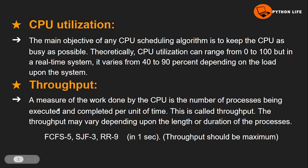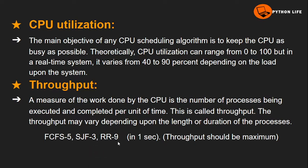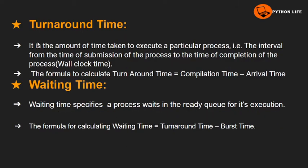The next criterion is throughput. Throughput measures the number of processes executed and completed per unit of time. For example, in First Come First Served, five processes execute; in Shortest Job First, three processes execute; in Round Robin, nine processes execute in one second. So Round Robin has the maximum throughput, making it the best choice for this criterion.